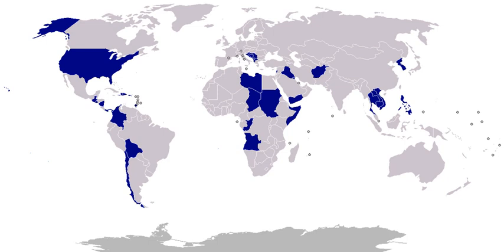1961, Cuba, Bay of Pigs invasion: known in Hispanic America as Invasión de Bahía de Cochinos or Invasión de Playa Girón, it was an unsuccessful military invasion of Cuba undertaken by the CIA-sponsored paramilitary group Brigade 2506 on April 17, 1961. 1962, Thailand: the third Marine Expeditionary Unit landed on May 17, 1962 to support that country during the threat of Communist pressure from outside. By July 30, the 5,000 Marines had been withdrawn. 1962, Cuba, Cuban Missile Crisis: on October 22, President Kennedy instituted a 'quarantine' on the shipment of offensive missiles to Cuba from the Soviet Union. He also warned the Soviet Union that the launching of any missile from Cuba against nations in the Western Hemisphere would bring about U.S. nuclear retaliation on the Soviet Union. A negotiated settlement was achieved in a few days.